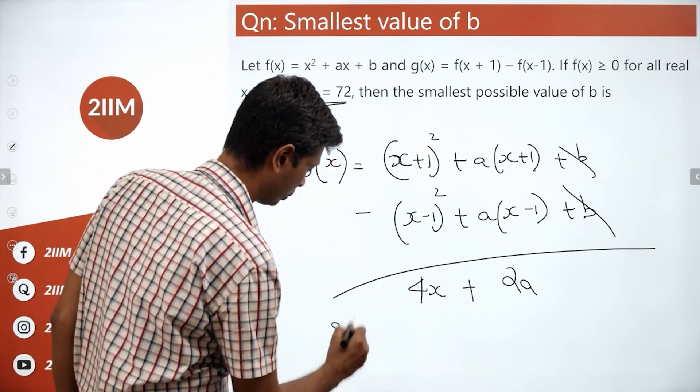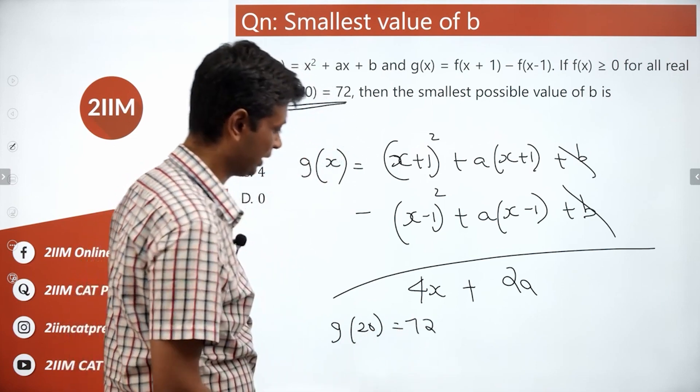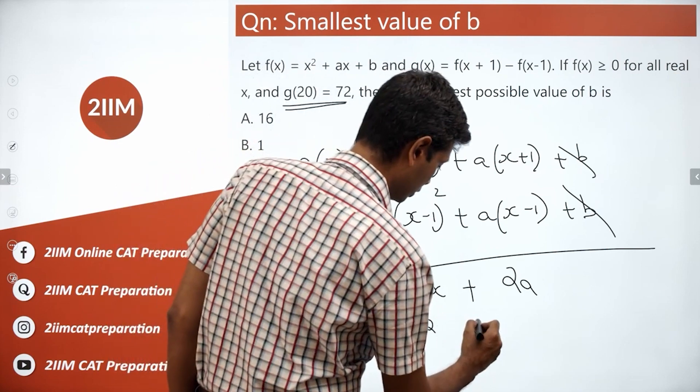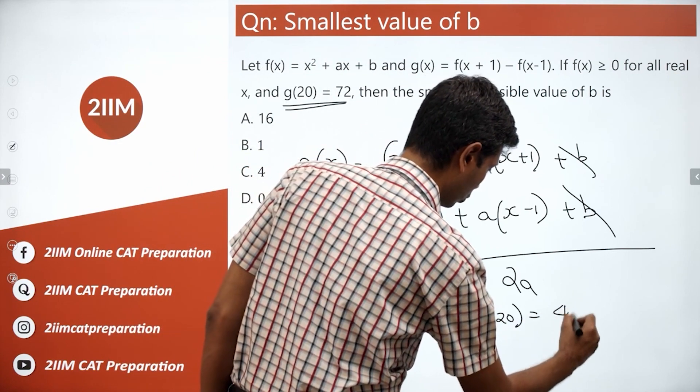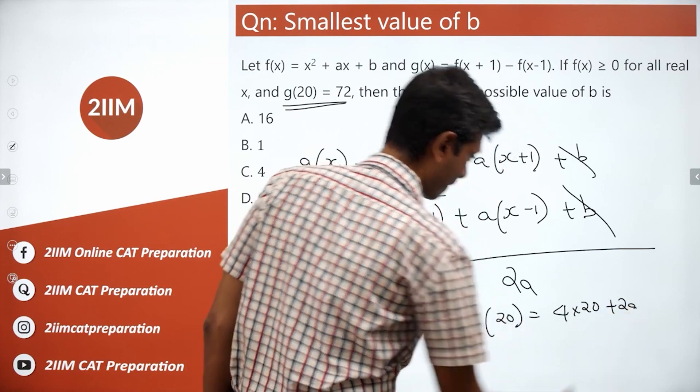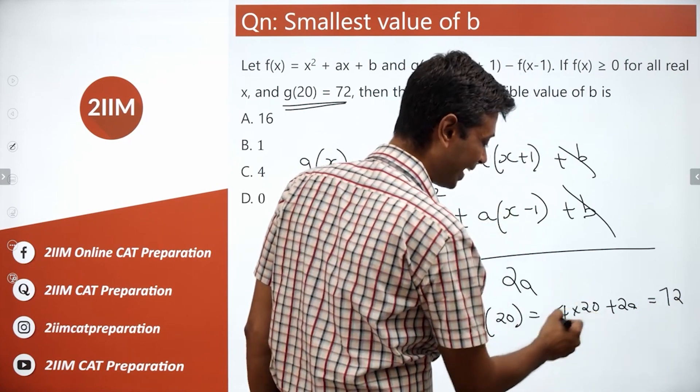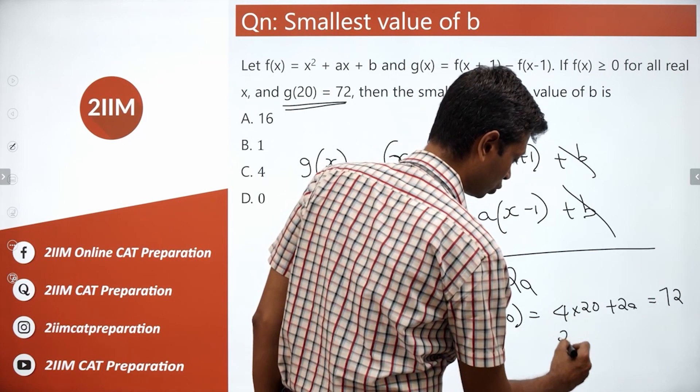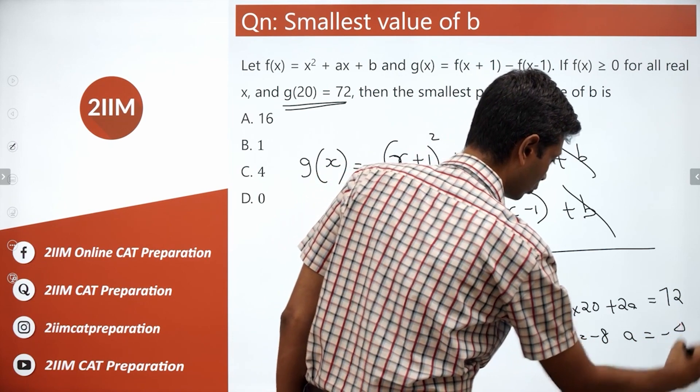We know g(20) = 72. Let's plug that in. g(20) is 4×20 + 2a, which equals 72. 4×20 is 80, so 80 + 2a = 72. Therefore 2a = -8, or a = -4.